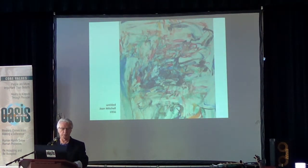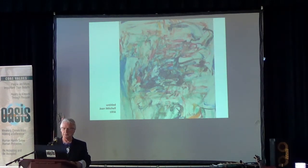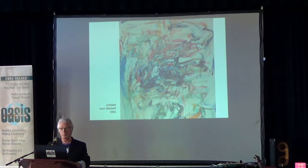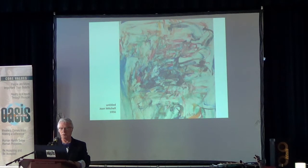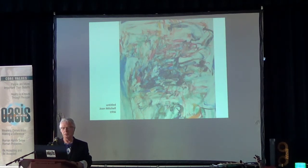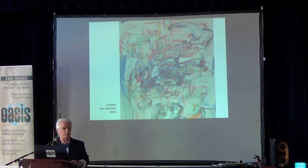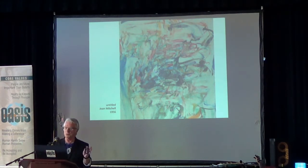Here's one of the abstract expressionists — Joan Mitchell. This is what she had to say: 'I paint my feelings of remembered landscapes. My paintings repeat feelings about Lake Michigan, water, or fields. They're more like poems. I could never mirror nature. I would rather paint what nature leaves with me.' Those two comments — Pollock and Mitchell — are about as close as we can get to understanding their work.